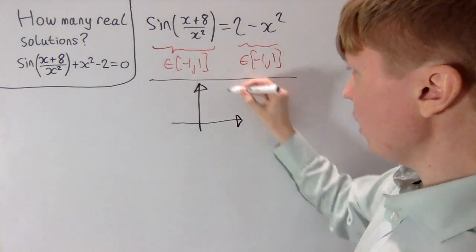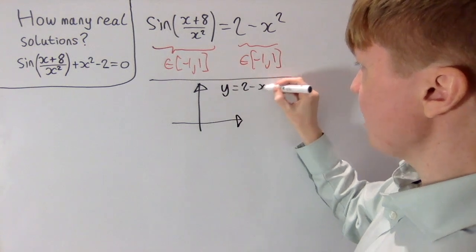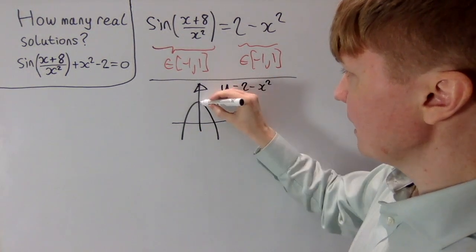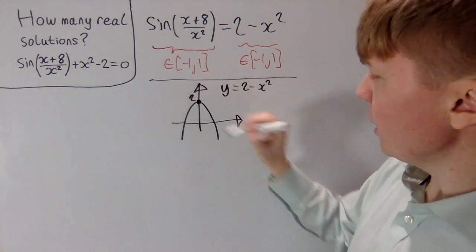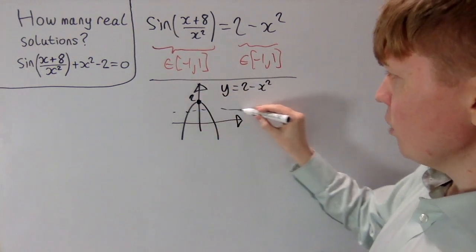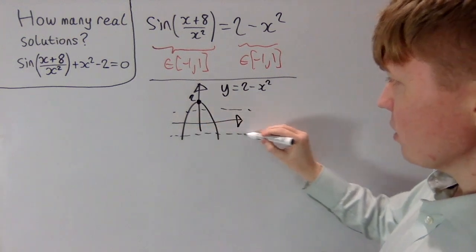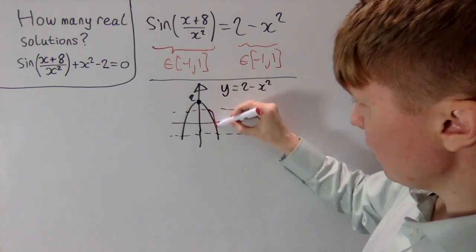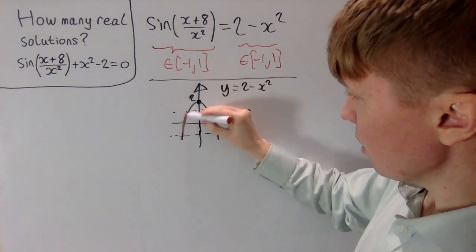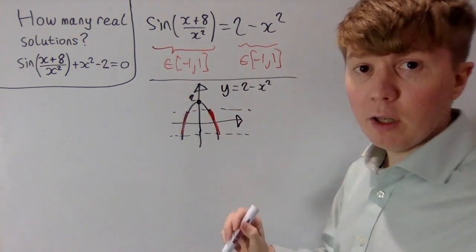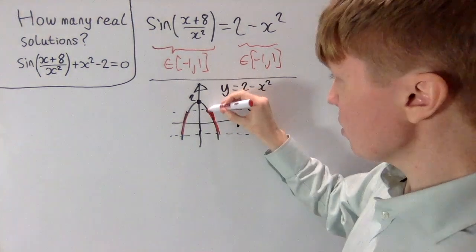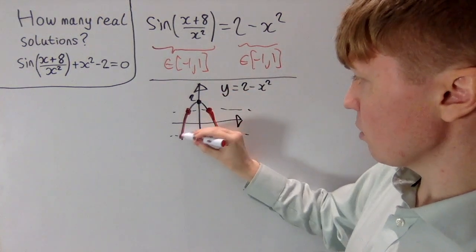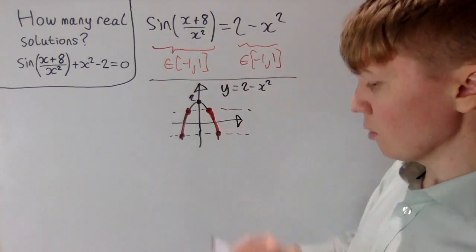If we look at the graph of y equals 2 minus x squared, we want to find where it's between positive and negative 1. We've got a y-intercept at 2, so we're interested in this region and also this region. We can solve 2 minus x squared equals 1, and 2 minus x squared equals minus 1.